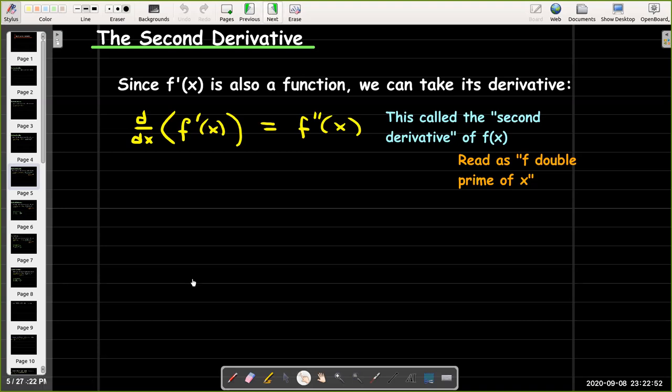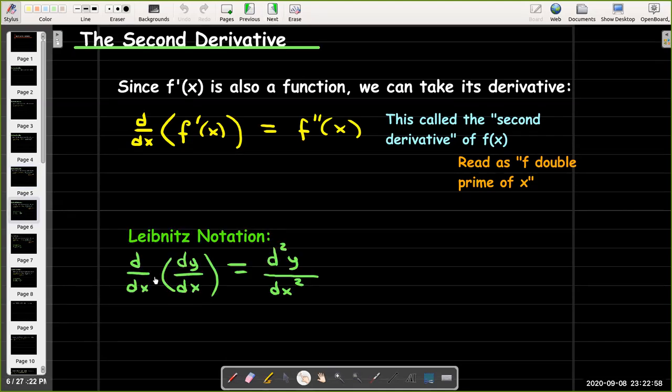For Leibniz notation, even though it's not a fraction, we're consistent in thinking about it as a fraction. So d/dx, if we were to think of this as multiplication, gives d², and then dx times dx gives dx². So the second derivative is d²y/dx².